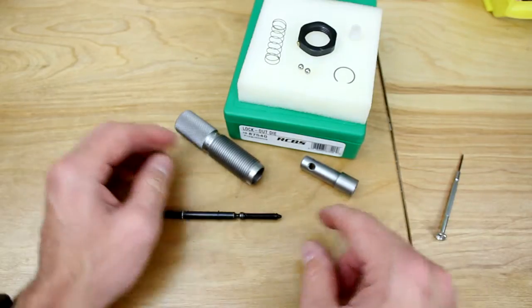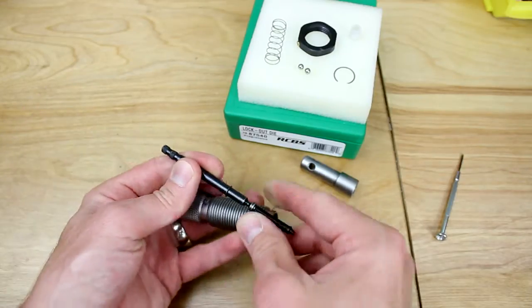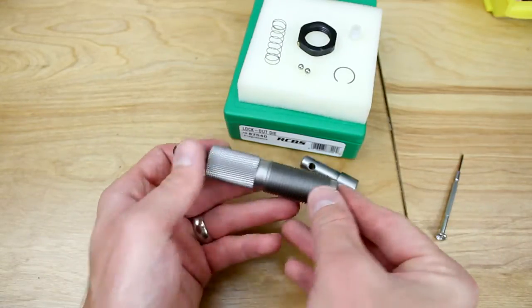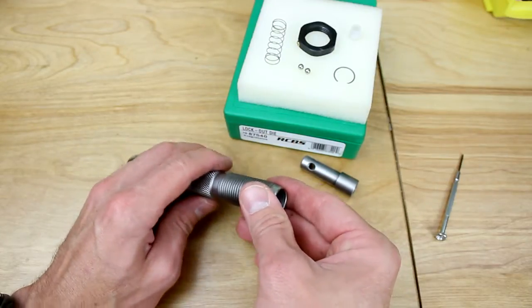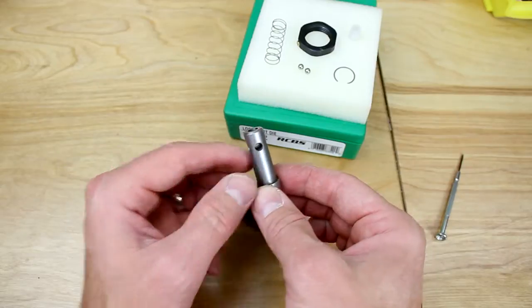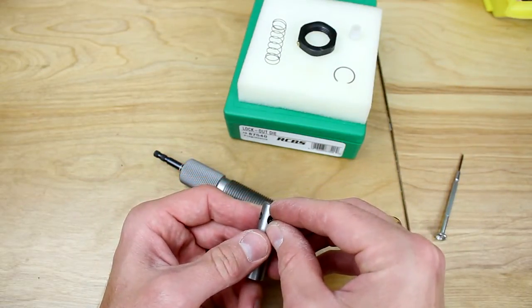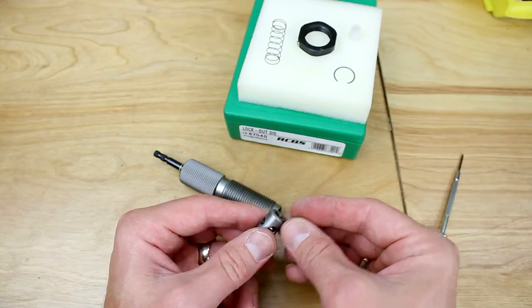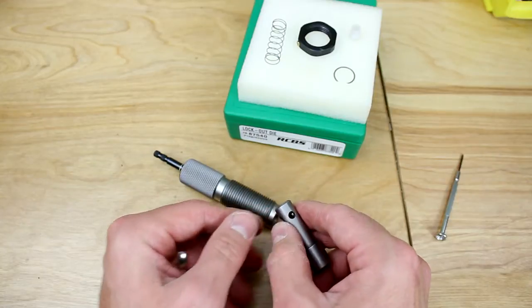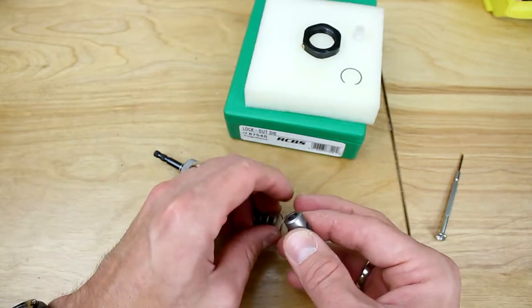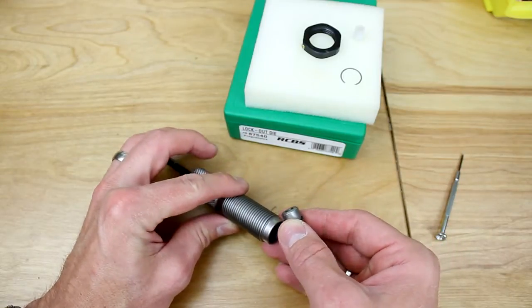So we are going to take this actuation rod back off. We are going to put the actuation rod back through and then prepare to insert this follower once again. And what we need to do is basically put the ball bearings in the side as follows.